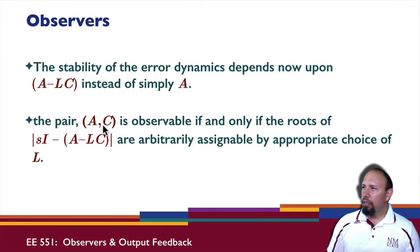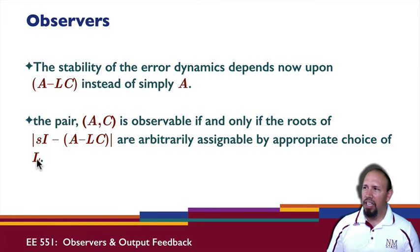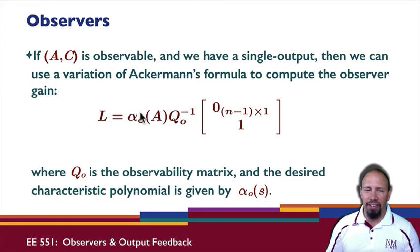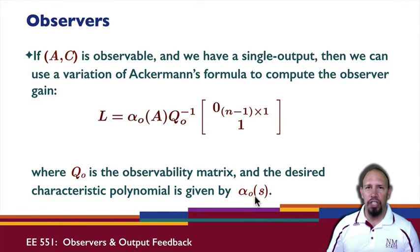The pair (A, C) is observable if and only if the roots of the characteristic polynomial of (A - LC) are arbitrarily assignable by appropriate choice of L. So if our system is observable, I can put the roots of this polynomial anywhere I want. If (A, C) is observable and we have a single output system, we can use a variation of Ackermann's formula to compute the observer gain L to place the eigenvalues where we want. Here Q_o is the observability matrix and alpha_o is the desired characteristic polynomial.